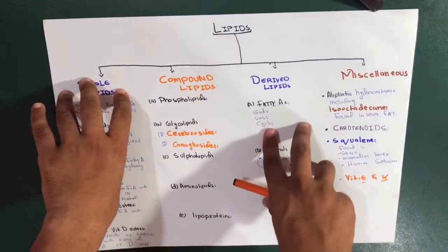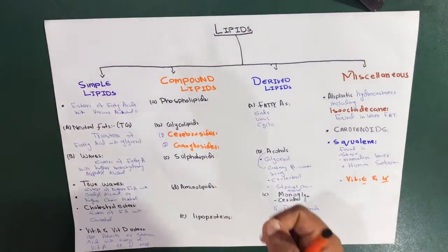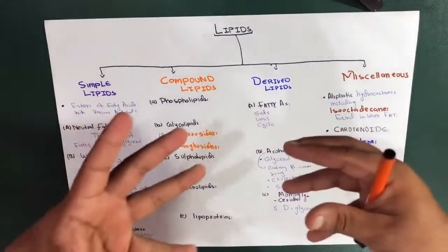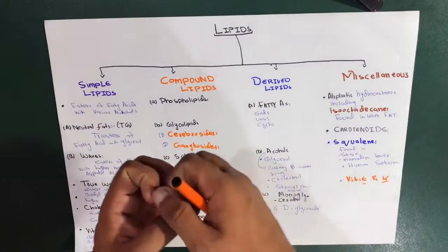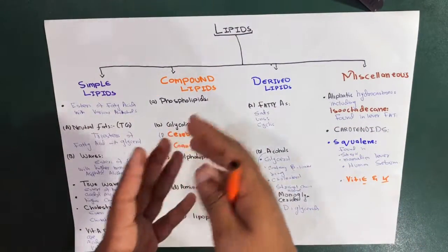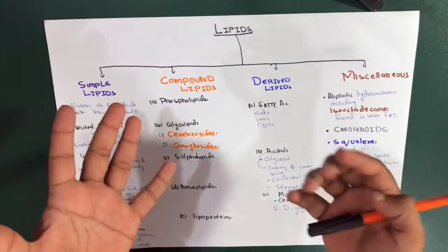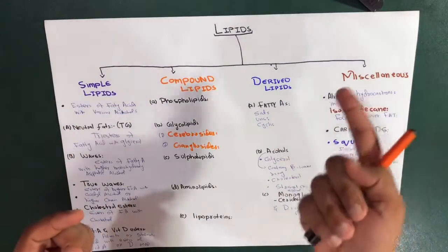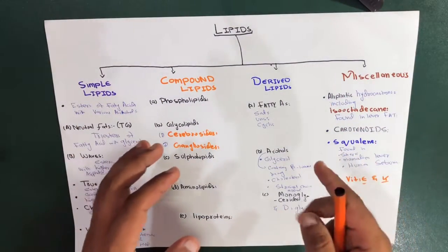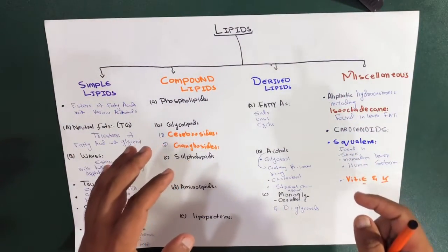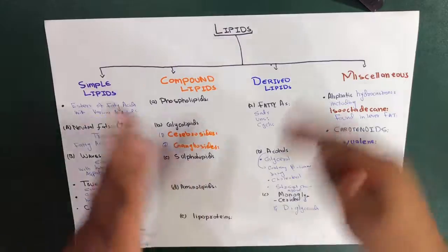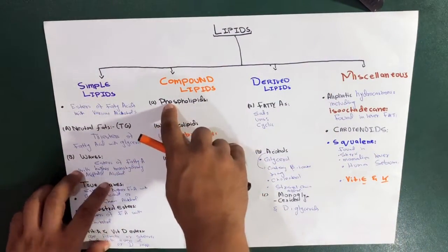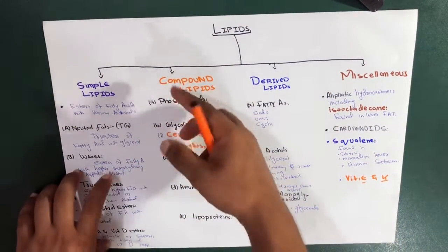Moving toward compound lipids — compound lipids are lipids with something added to them. You can define them as esters of fatty acids containing groups other than, and in addition to, the alcohol and fatty acids. Let's now talk about phospholipids.